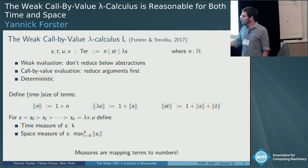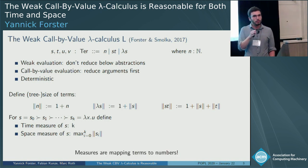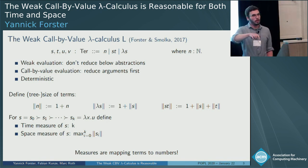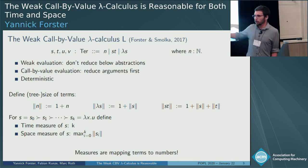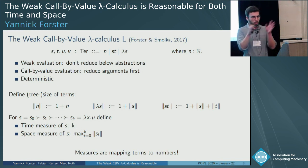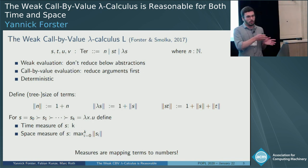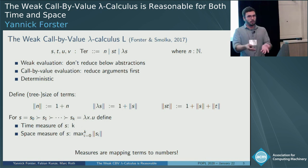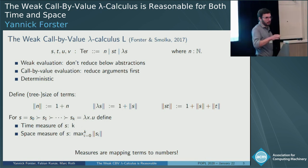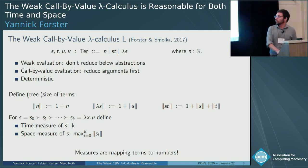It's a bit different from Turing machines: measures here map one term to one natural number. On Turing machines it's usually a Turing machine plus input to a natural number. You don't need the input here because lambda terms can compute without explicit input. You can recover the usual behavior by plugging an input into the lambda term.